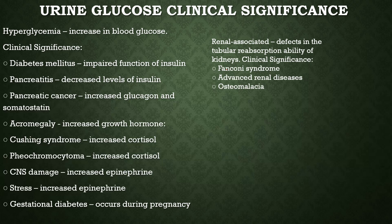The second parameter is protein. The principle is the protein error of indicators. The pad is impregnated with an indicator — usually tetrabromphenol blue, tetrachlorophenol, or tetrabromosulfonphthalein. The acid buffer maintains the pH of the indicator at 3, giving a yellow coloration in the absence of protein — that is the negative color.